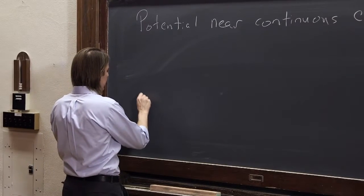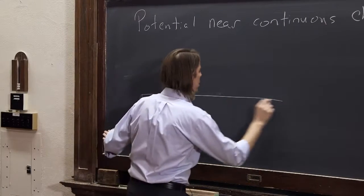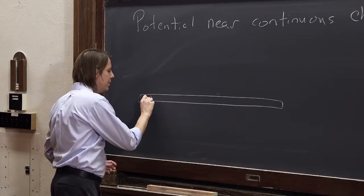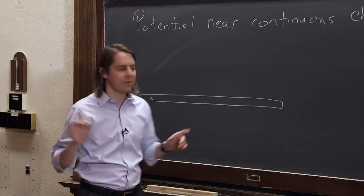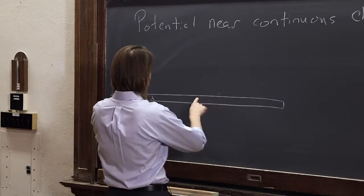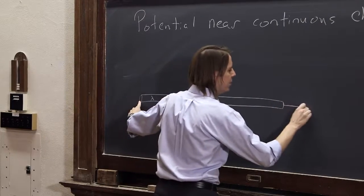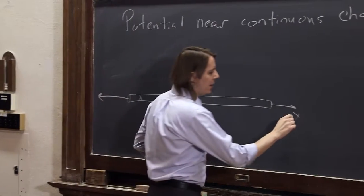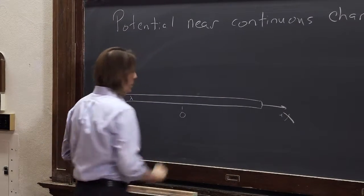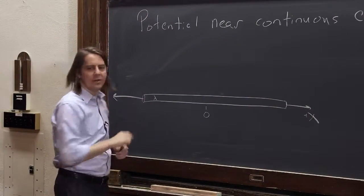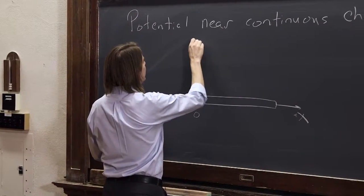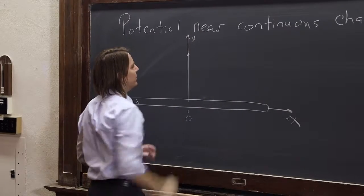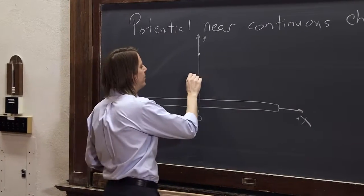Let's start with the charged rod with some charge density lambda. It has length L, and we set up a coordinate system with the rod on the x-axis and the center of the rod at the origin. We want to know the potential at some point up from the center — on the y-axis — call it point P, at height A above the center.